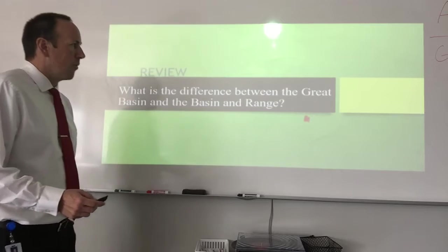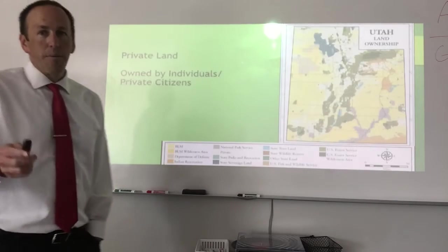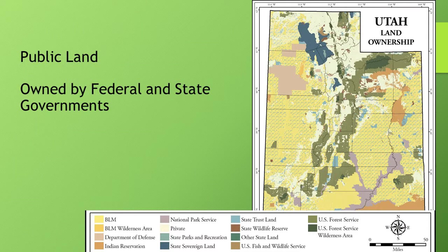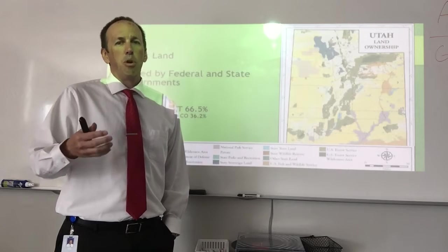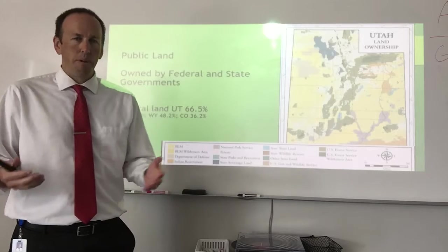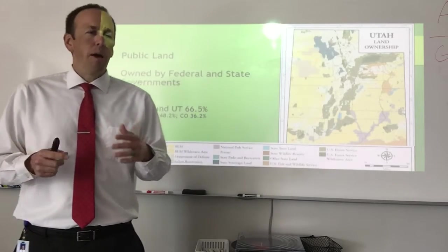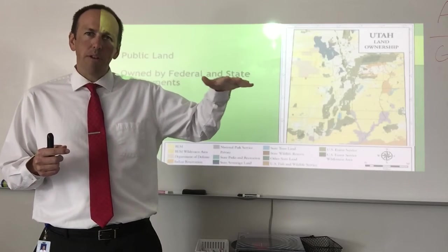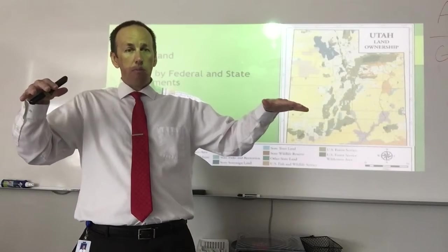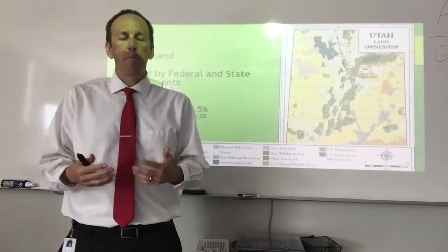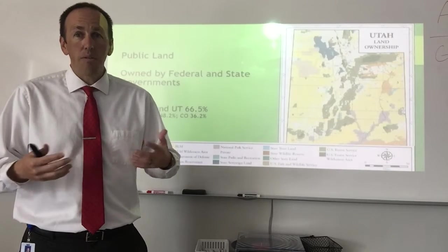On this map, all the yellow and green — most of the colors — that's owned by the federal government. Those are called public lands, as opposed to the cream-colored land that's owned by private individuals, or private land. In Utah, about 66.5% of the land is owned or controlled by the federal government.